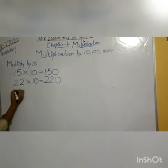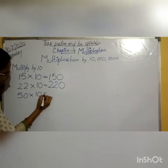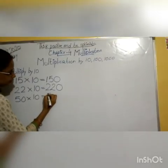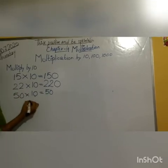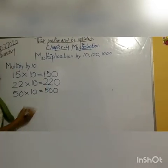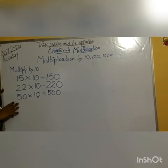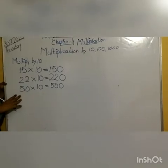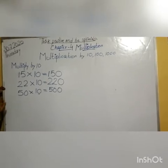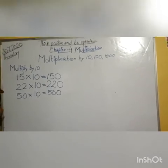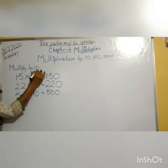Take one more digit: 50 multiply by 10. First write the digit, that is 50. Put one more zero to the extreme right of the number. The answer is 500. Remember one thing: whenever you multiply any digit by 10, don't forget to put one zero to the extreme right of the digit, or you can say add one more zero to the extreme right.